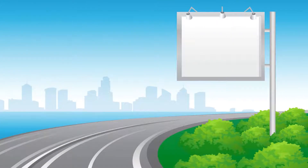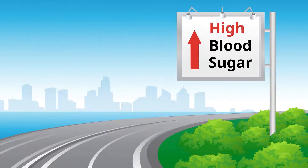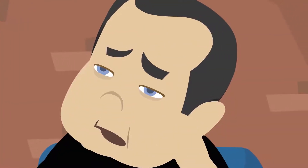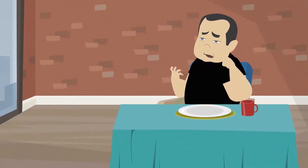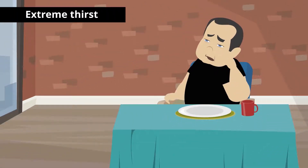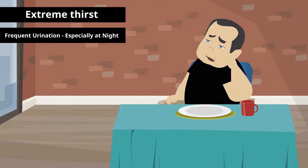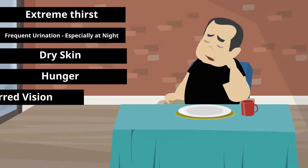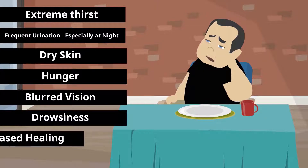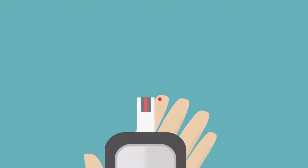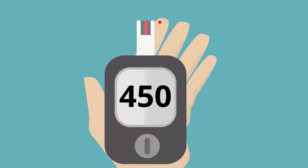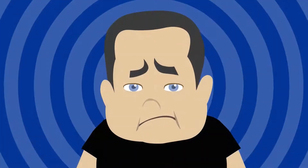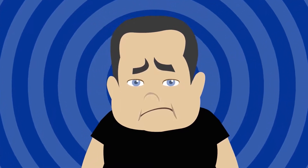Now we will talk about the signs and symptoms of high blood sugar. Symptoms of high blood sugar, sometimes called hyperglycemia, include extreme thirst, frequent urination especially at night, dry skin, hunger, blurred vision, drowsiness, and decreased healing. If your blood sugar is constantly high, your body might adjust and you may not have symptoms, which can be very dangerous. That's why diabetes is sometimes called a silent killer.